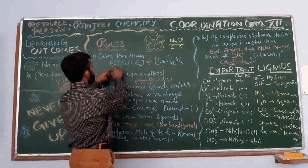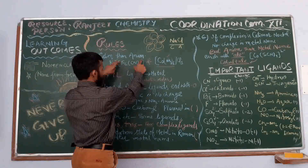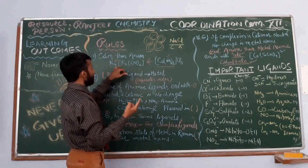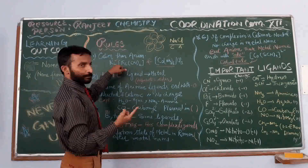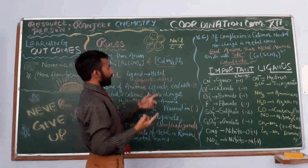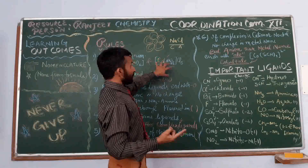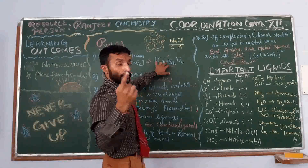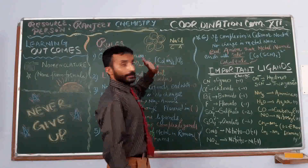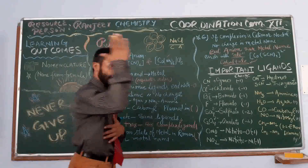For example, here potassium is the cation and the coordination entity is the anion. The name will start from potassium. Here the anion is your complex, and the cation is your complex ion in another case. We write the name starting from the cation, then the anion.